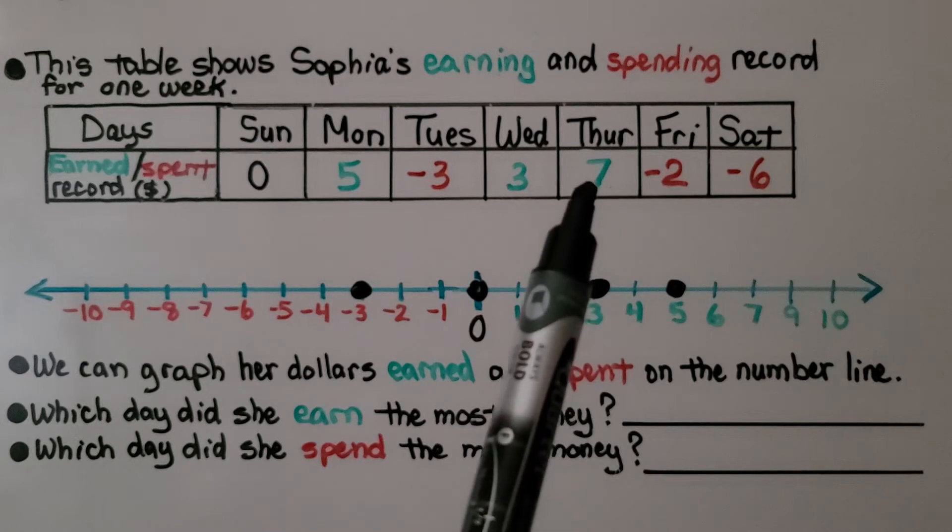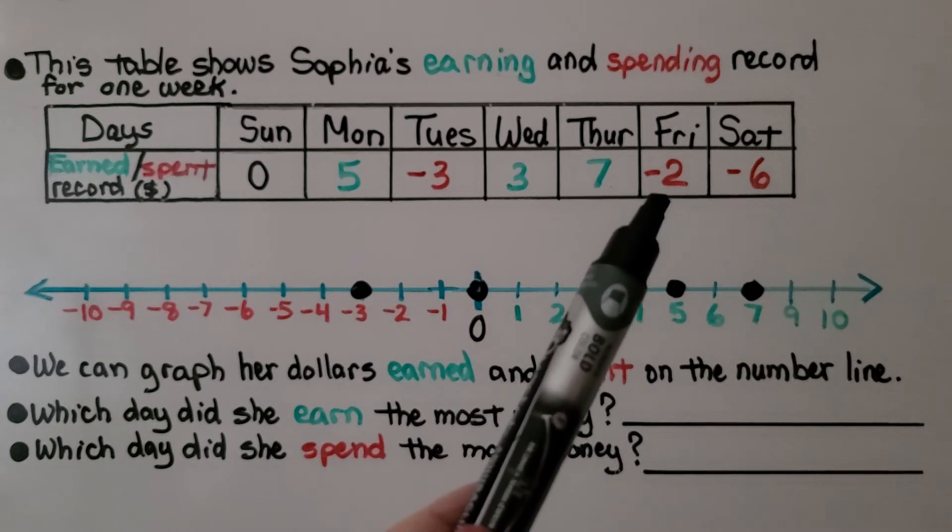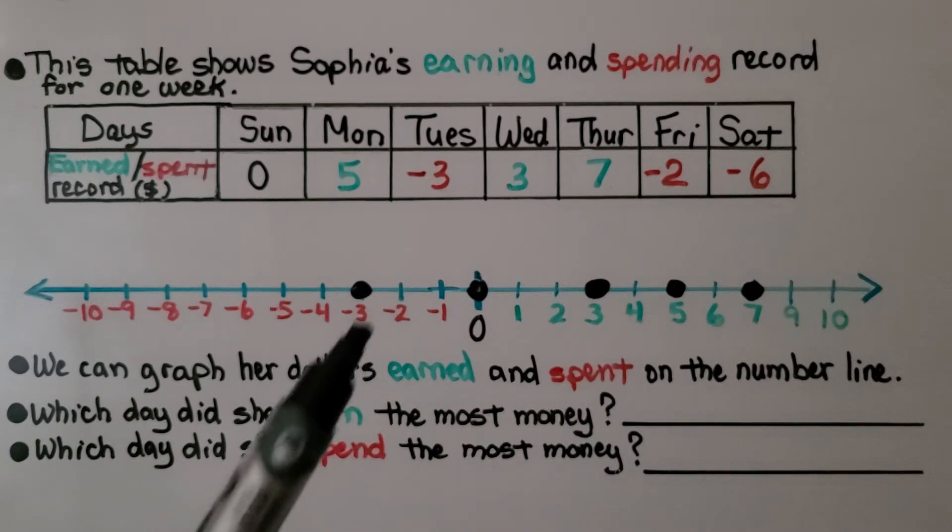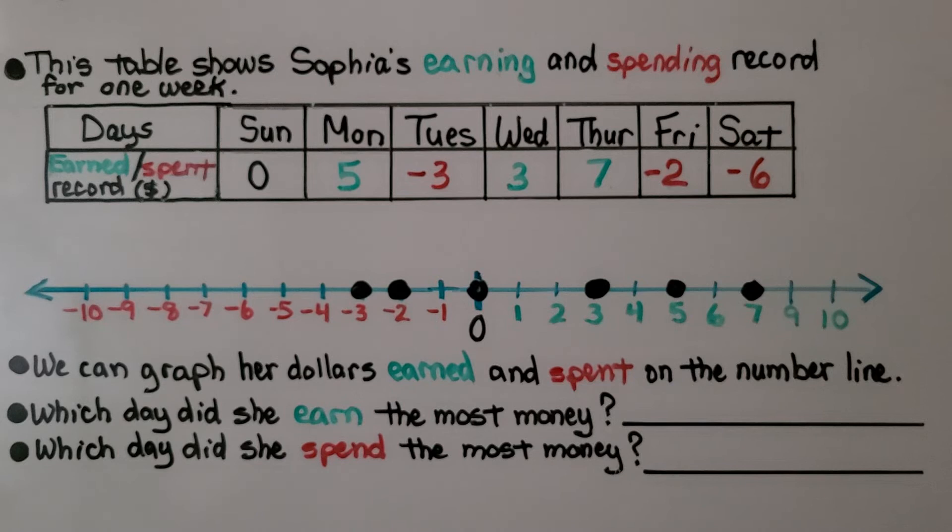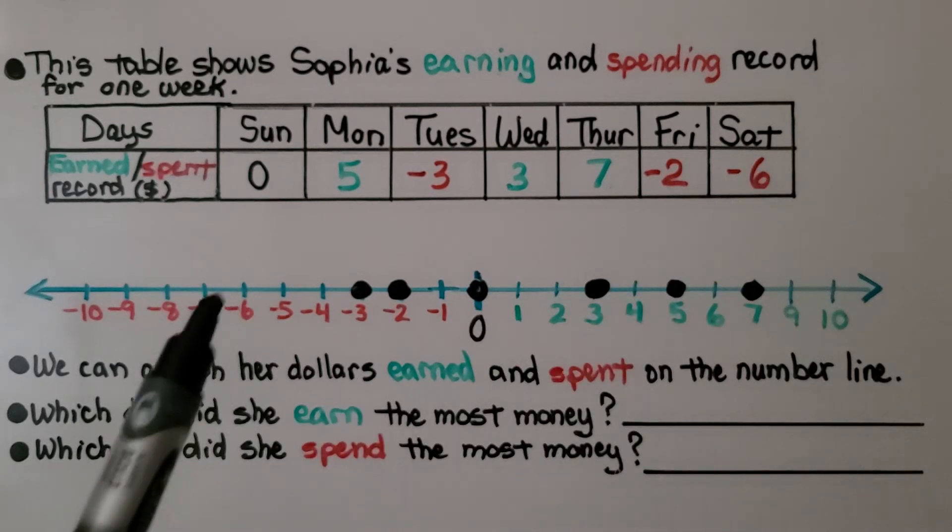Thursday, she earned $7. We can plot that. Friday is a negative 2. That means she spent $2. We can plot that. Saturday, she spent $6. It's a negative 6. We can plot that.